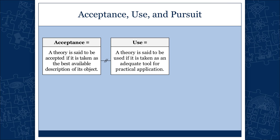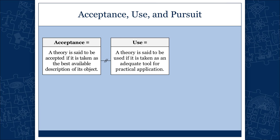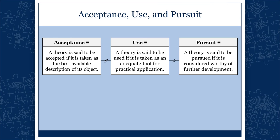This should be differentiated from use. We say a theory is used when there is a practical application for it, regardless of whether it is accepted or not. And the final category is pursuit. A theory may or may not be accepted; there may or may not be any particular use for it. But you may find the theory worthy of further elaboration — you have this vague idea that isn't the best in the market and there's not much use for it at the moment, but you think it's something worthy of further development.